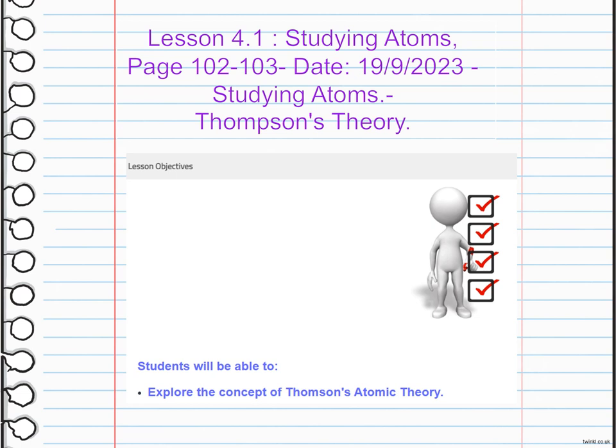Like plums in a pudding, this model — known as the plum pudding model — revolutionized our understanding of atomic structure and laid the groundwork for further discoveries about subatomic particles. J.J. Thomson's theory was a significant step forward in our understanding of the atom.